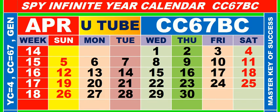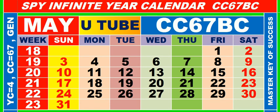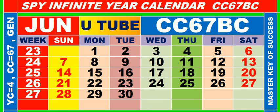Calendar for the month of April, having calendar code equal to 67. Calendar for the month of May, having calendar code equal to 67. Calendar for the month of June, having calendar code equal to 67.